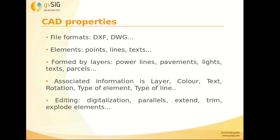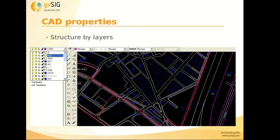The editing options in CAD include digitizing, creating parallels, extending, trimming, or exploding elements — we work with vector data. Here we can see how a CAD application works, with a file containing different layers for different information, for example streets, parcels, buildings, and texts. Each type of information is in a different layer, making these heavy and sometimes very large files.